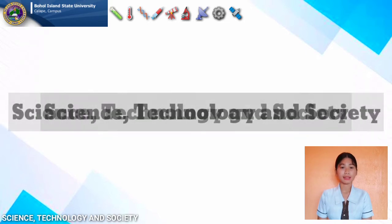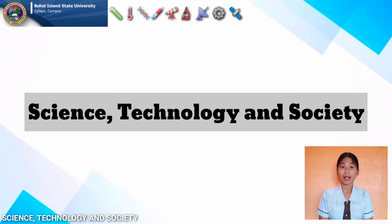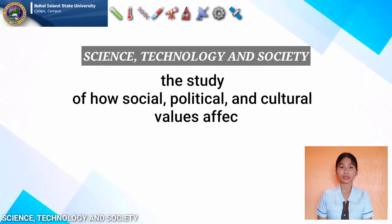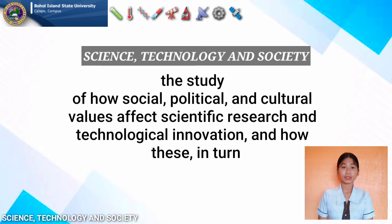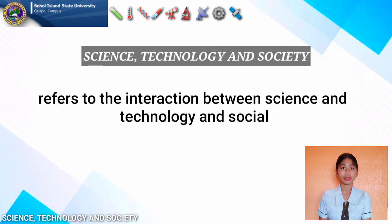What is Science, Technology and Society? Science, Technology and Society explores the powerful social, ethical, and political relationships that drive research and innovation. The program's primary goal is to give students analytical skills that help connect science and technology to broader social needs. It is the study of how social, political, and cultural values affect scientific research and technological innovation, and how this in turn affects society.